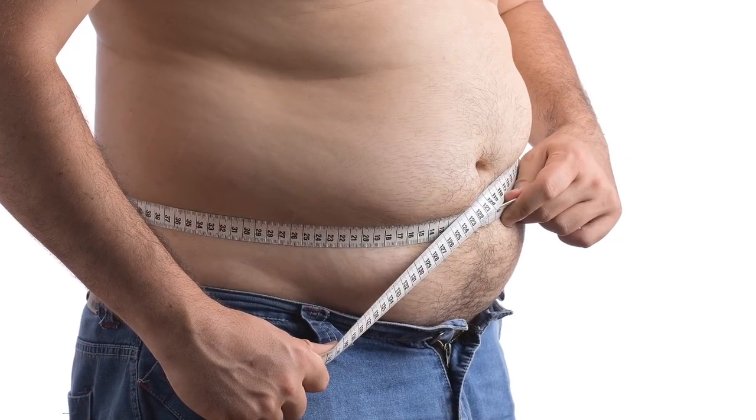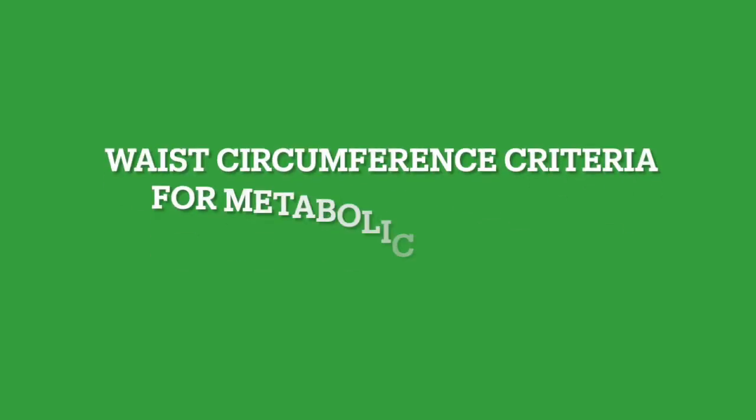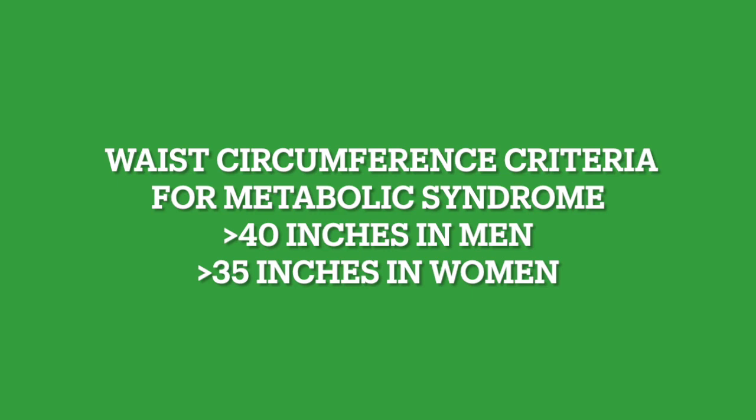So what is metabolic syndrome? There are several widely accepted criteria. The first is waist circumference. Waist circumference is extremely important, and I believe it should be measured in essentially every patient who is at risk for metabolic syndrome or who appears to be overweight, as it carries a lot of predictive medical significance.